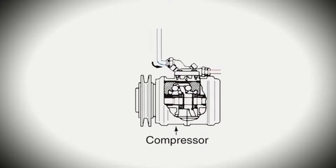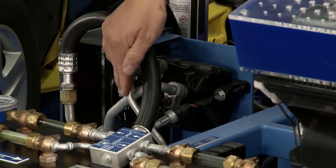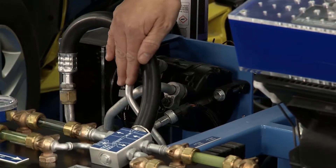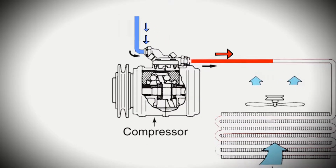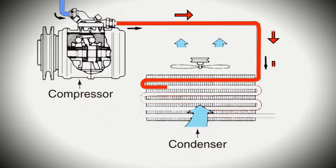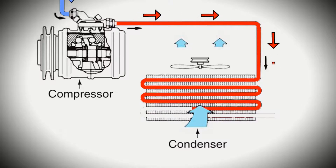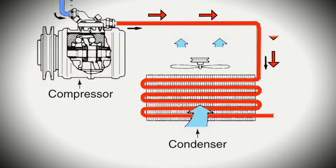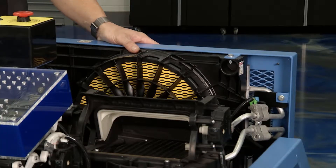It all starts right here at the compressor. The compressor puts out a high-pressure gas, and this is the hottest part of the system — if you were feeling this, it would feel really, really warm. That high-pressure gas gets sent over to the condenser, which is located in the front of the car. In the condenser, the refrigerant changes state: from a high-pressure gas to a high-pressure liquid.